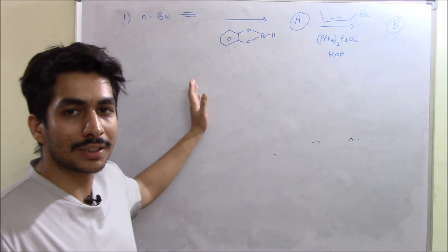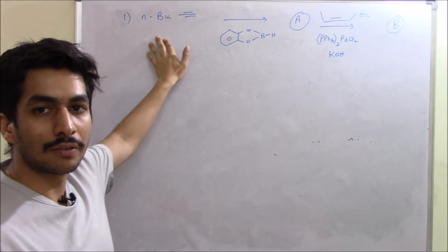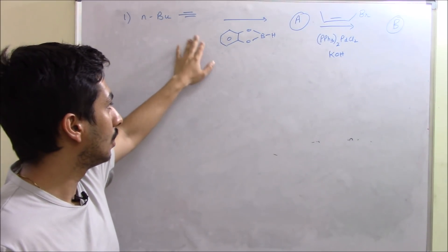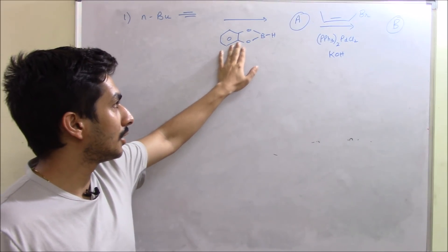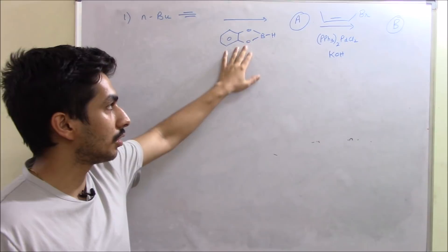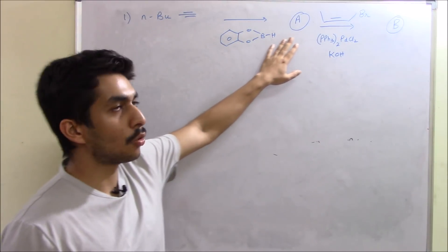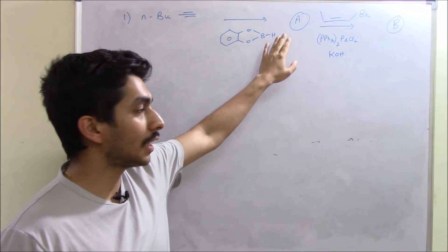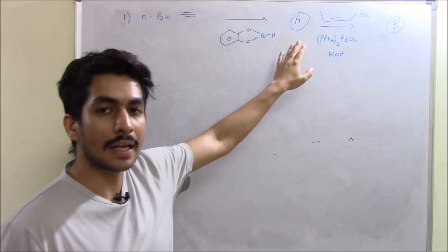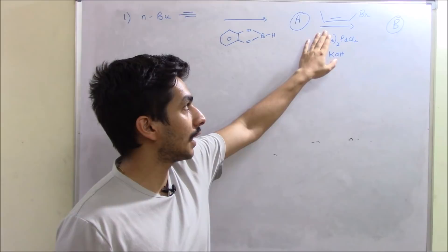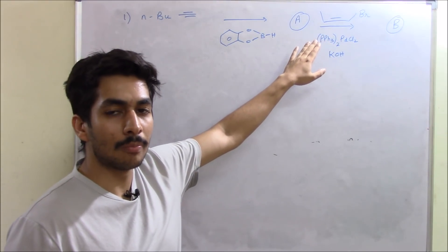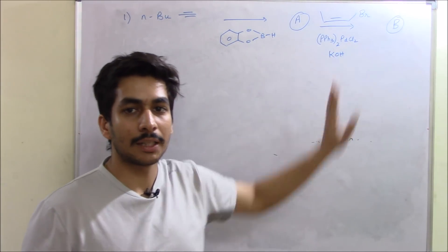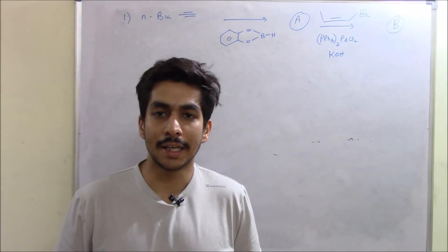This particular question came in your CSI NET December 2017 examination. It's given to us that there's an alkyne, and to this alkyne we are adding a boron reagent. On this addition of the boron reagent, we get compound A. To compound A, we are adding an allyl halide — a bromo compound with a double bond — along with a palladium catalyst and a base, and we get product B. So what we need to identify is what is product A and what is product B.